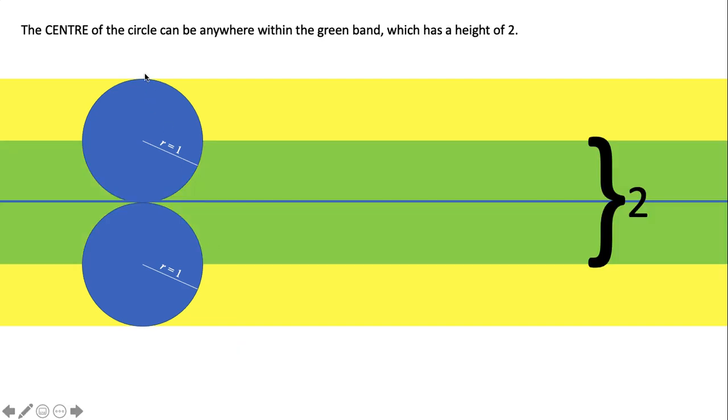So the center of the circle can be anywhere within the middle two of that band. So two is basically two radii of the circle. So the center of the circle can be anywhere within that green band which has a height of two.